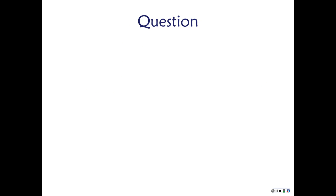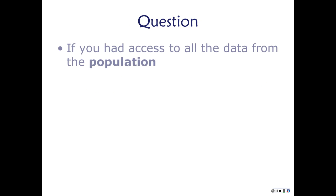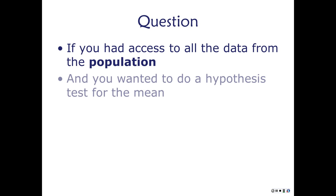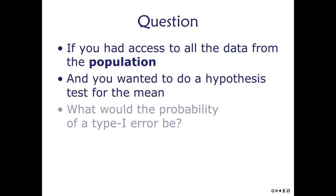Final question: if you had access to all the data from the population and wanted to do a hypothesis test for the mean, what would the probability of a Type 1 error be? We're done with Chapter 4.